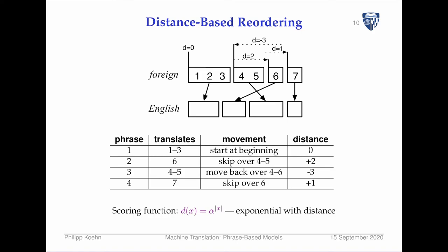Here's a foreign sentence mapped to English. For each foreign phrase we check how much it was reordered. We start at the beginning — we expect to start at the beginning of the foreign sentence too, so there's no reordering. Then we translate the next phrase.